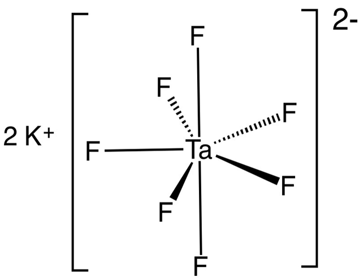Potassium heptafluorotantylate is an inorganic compound with the formula K2TaF7. It is the potassium salt of the heptafluorotantylate anion. This white, water-soluble solid is an intermediate in the purification of tantalum from its ores and is the precursor to the metal.